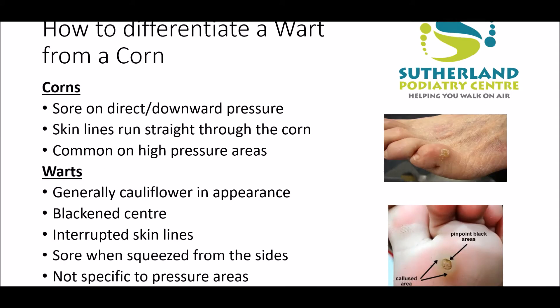So how do you differentiate a wart from a corn? Corns are sore on direct or downward pressure, have skin lines that run straight through them, and commonly occur on high pressure areas. Warts are generally cauliflower-like in appearance, have a blackened centre and interrupted skin lines, are sore when squeezed from the sides, and are not specifically noted on pressure areas.